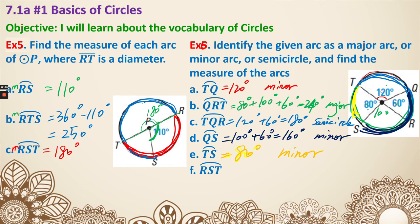Last, arc RST - that is 180 degrees, making it a semicircle. That is everything for 7.1a. Thank you.